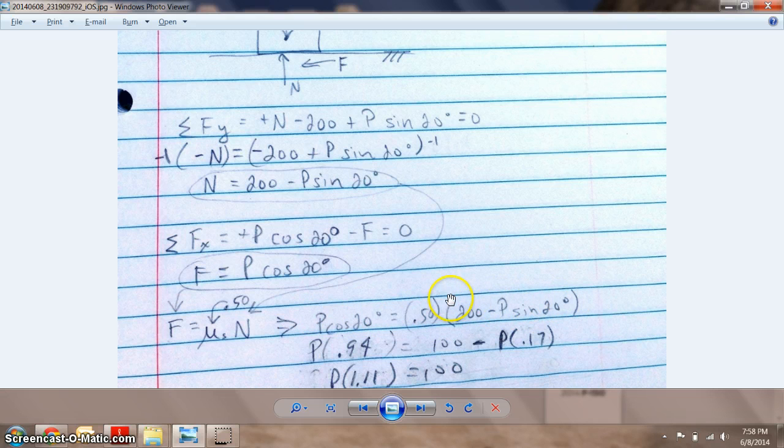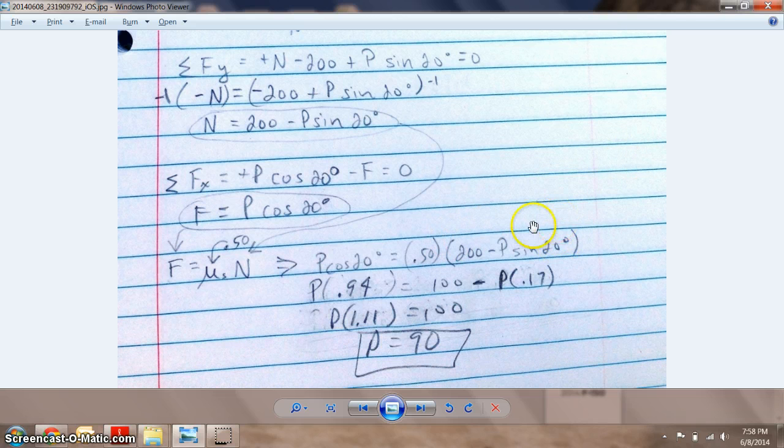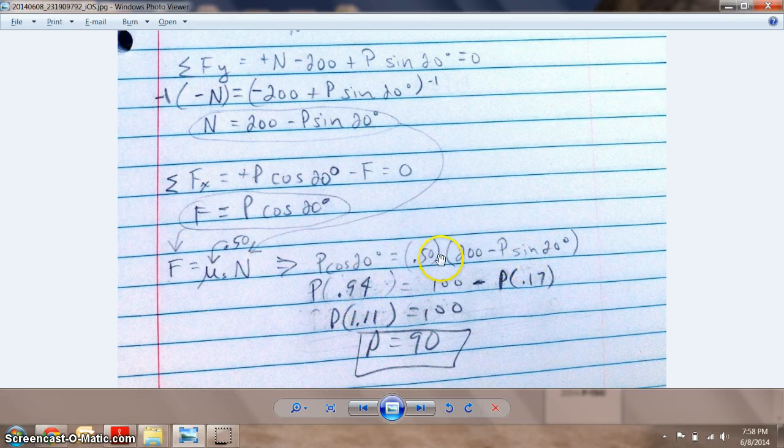So basically, cosine of 20 is 0.94. I did a couple steps at once here. 0.5 times 200 is 100, 0.5 times P times sine of 20 is 0.17P. So now we have 0.17P and a 0.94P, and these are added together here or subtracted.